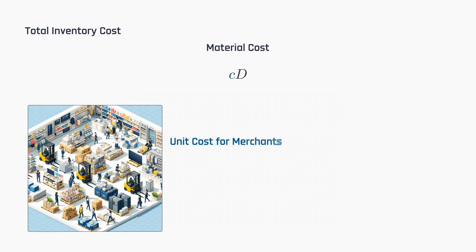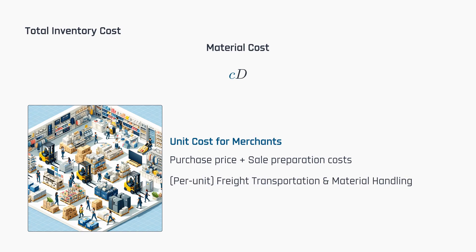For merchants, the unit cost encompasses the purchase price from suppliers, plus any additional costs necessary for preparing the product for sale, such as packaging and labeling. It often also covers per-unit charges for freight transportation and material handling activities, like loading and unloading.